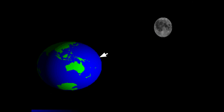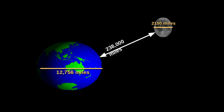A couple of moon and Earth characteristics with respect to how they are related to one another. In terms of miles, the moon can range between 238,000 to 250,000 miles from the Earth on average, which astronomically is actually pretty close. The diameter of the Earth is about 12,756 miles, compared to the diameter of the moon, which is about 2,150 miles. The moon is just about one quarter the size of the Earth.